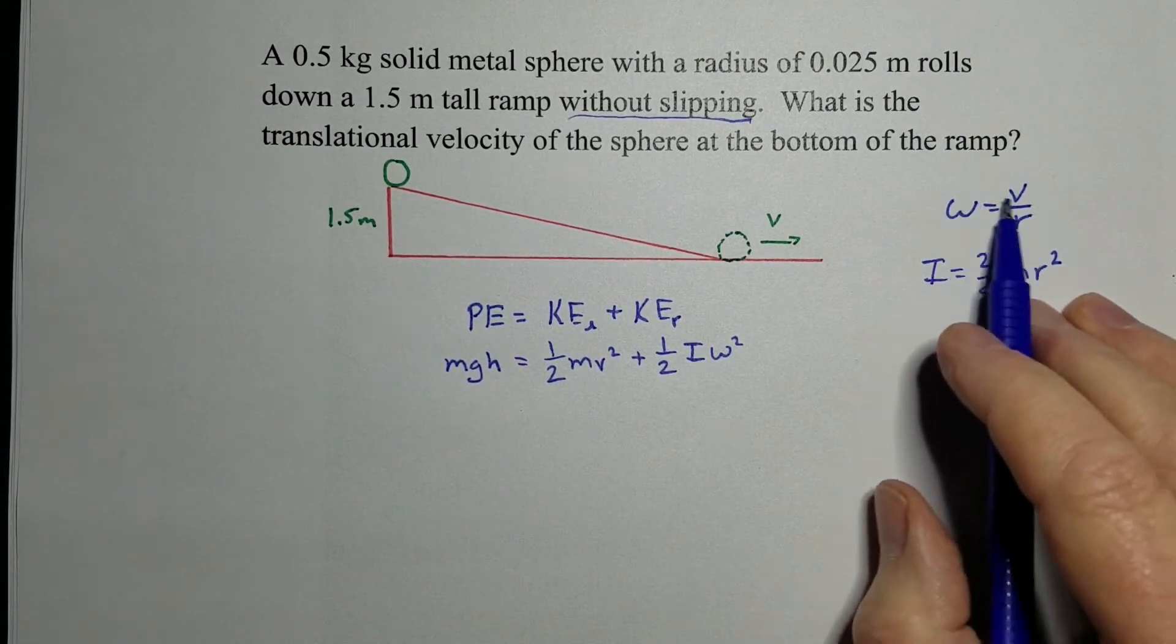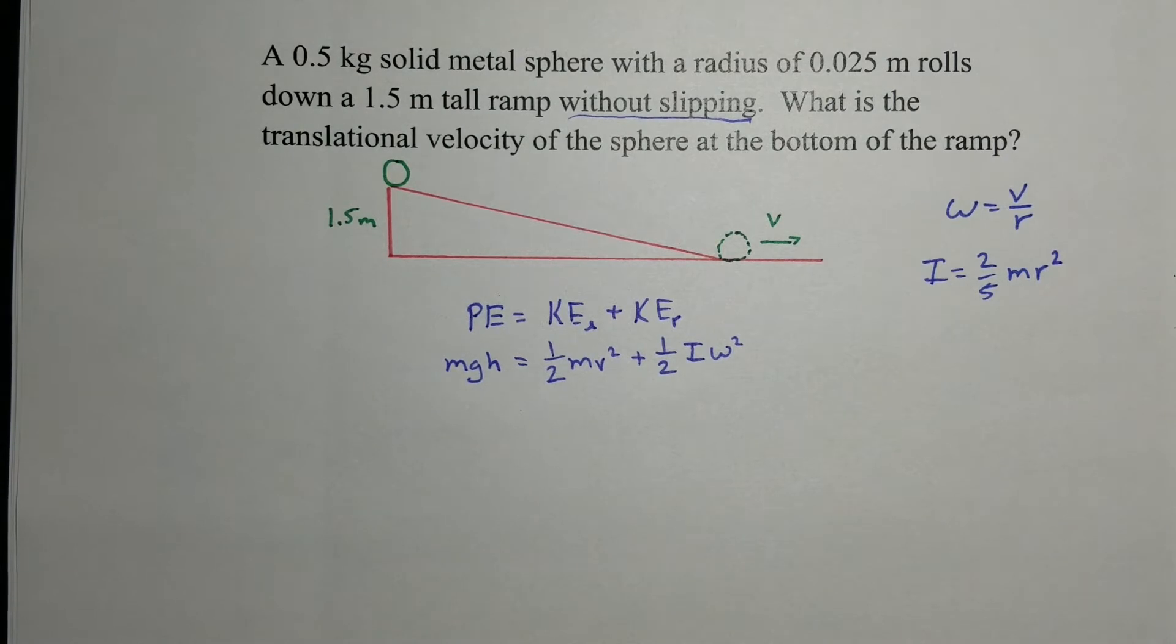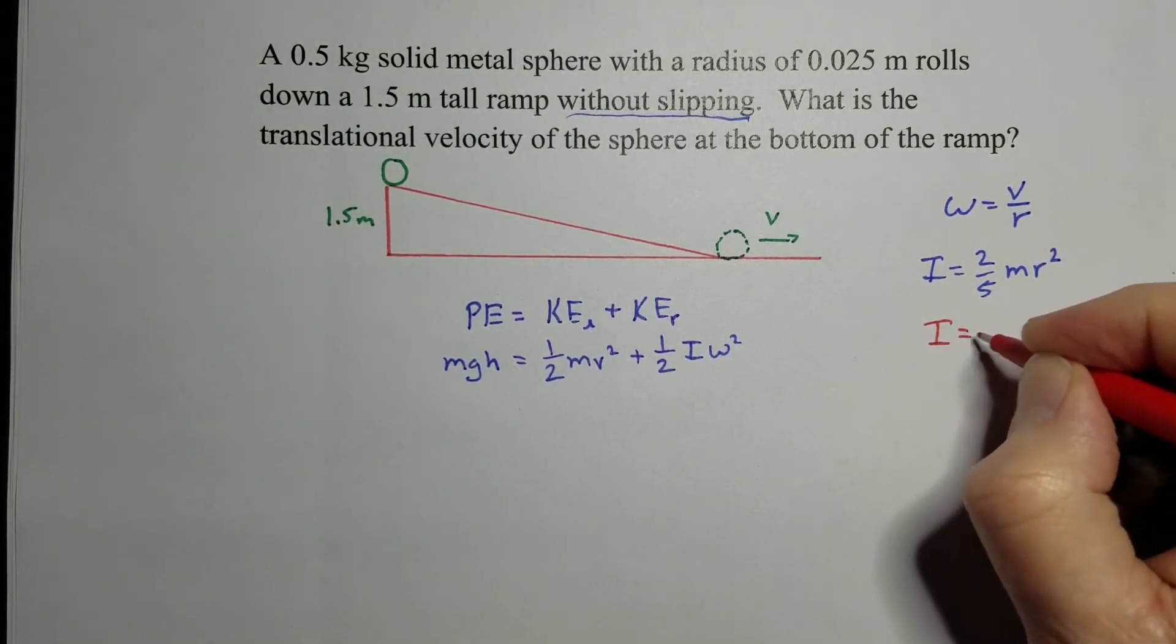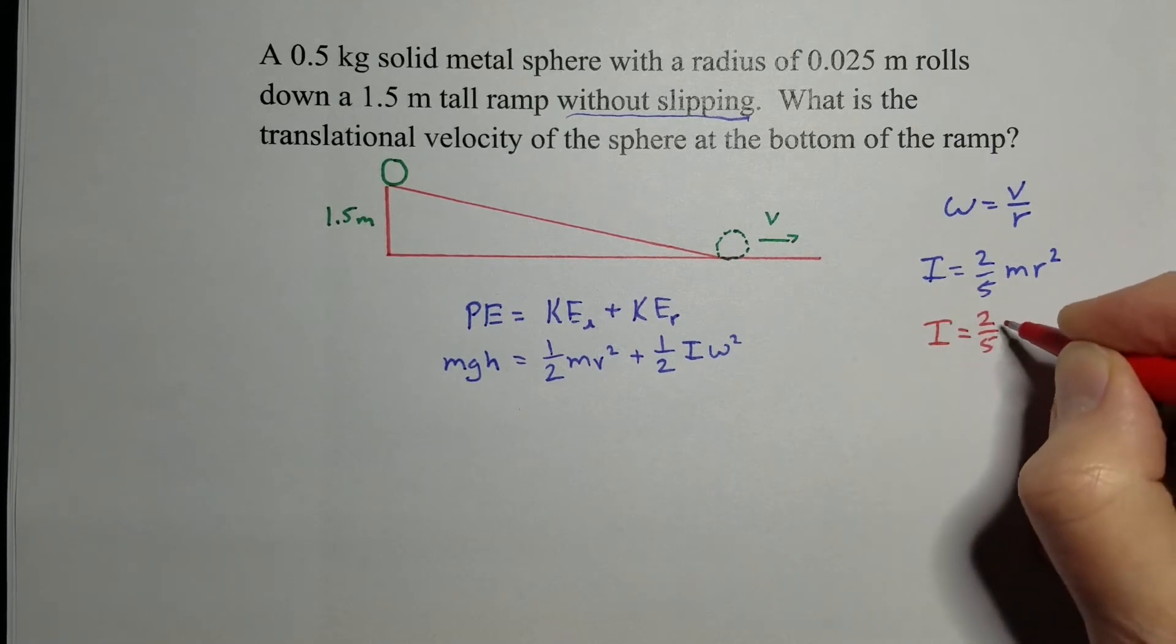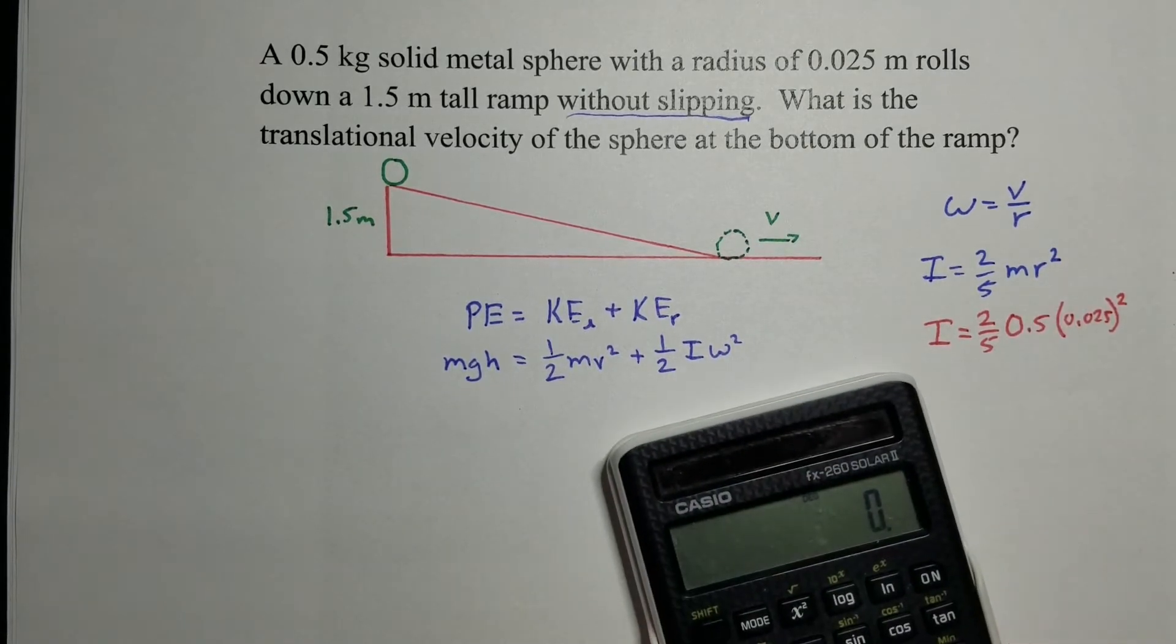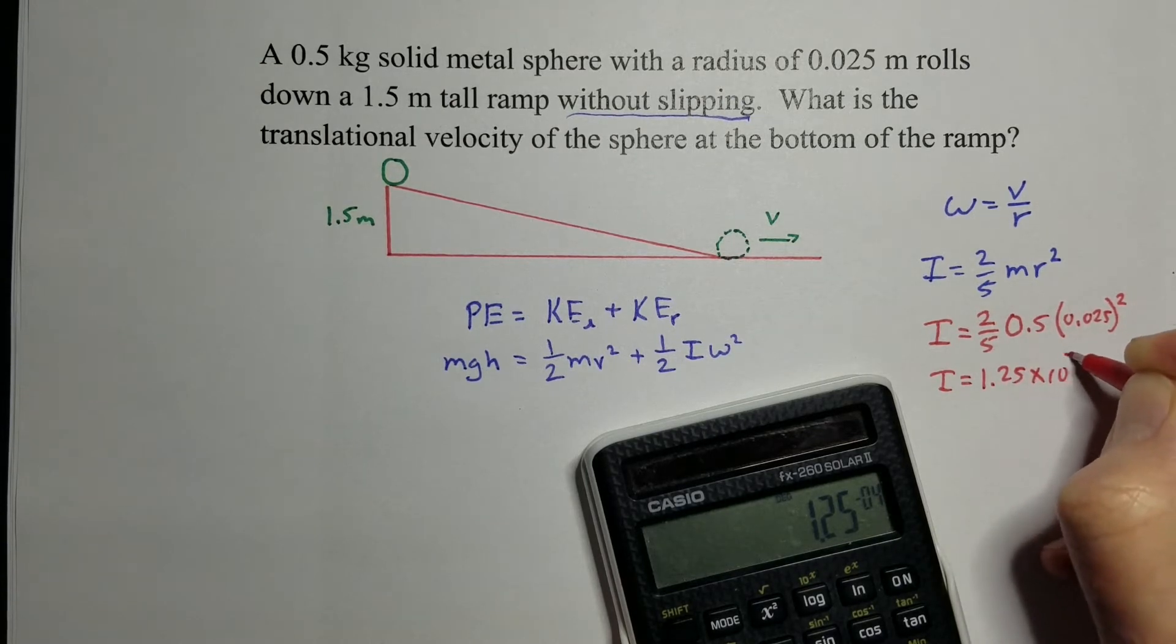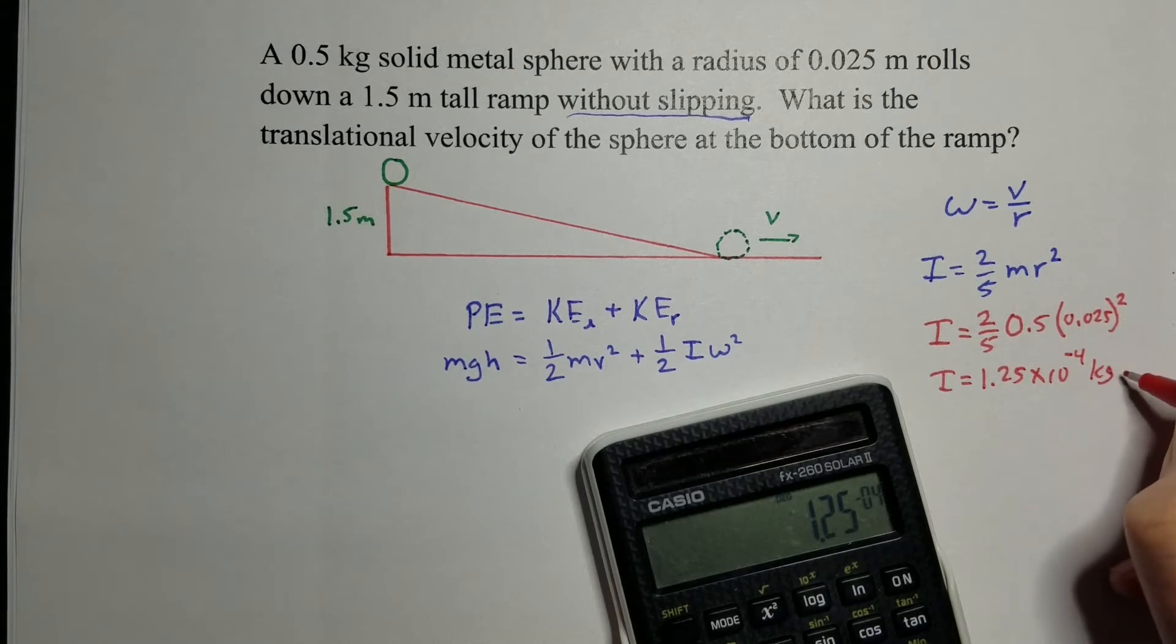Kinetic energy is one-half mv squared. And rotational kinetic energy is one-half I omega squared. And so the moment of inertia for the sphere is this. And we can use this to change that into a linear type speed because it's not slipping. So let's start by working the numbers on this and seeing what we get. So first of all, the moment of inertia is two-fifths the mass. In this case, it's 0.5 times the radius squared, which is 0.025 squared. So if we actually calculate that, 0.025 squared times 0.5 times 2 divided by 5, we get a moment of inertia to be 1.25 times 10 to the negative 4 kilograms meters squared.